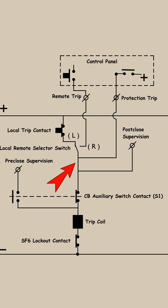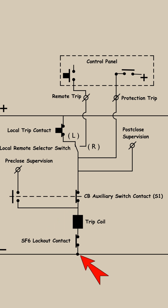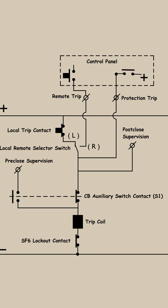Since the SF6 gas is at normal pressure, that contact will be closed, allowing the negative potential to reach the coil terminal. As a result, the coil will be energized and it will trip the circuit breaker.